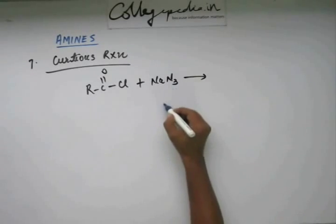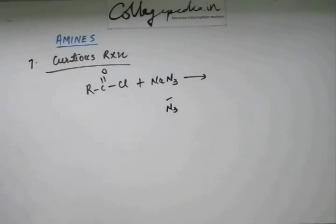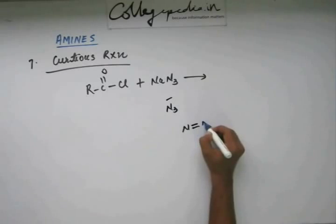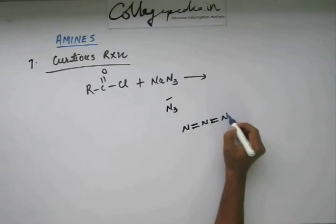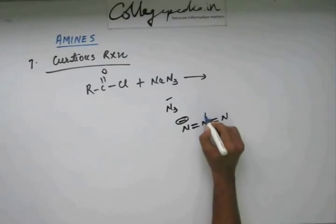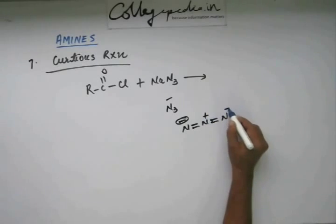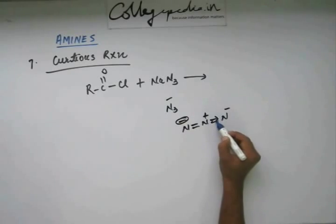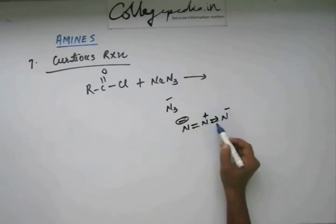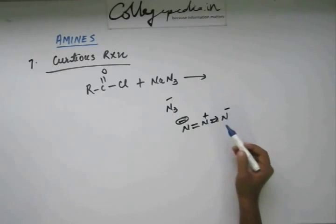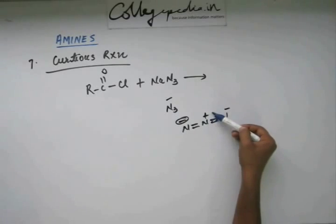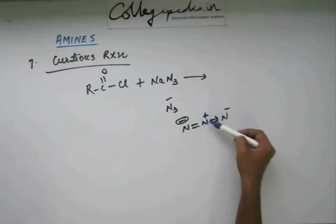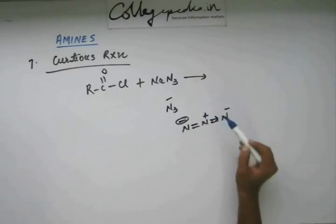First of all if you don't know what sodium azide is, the written compound is sodium azide. This anion N3- is called azide. Let's have a quick look at the structure, how this azide should be looking. These are formal charges plus minus. This is a coordinate bond.